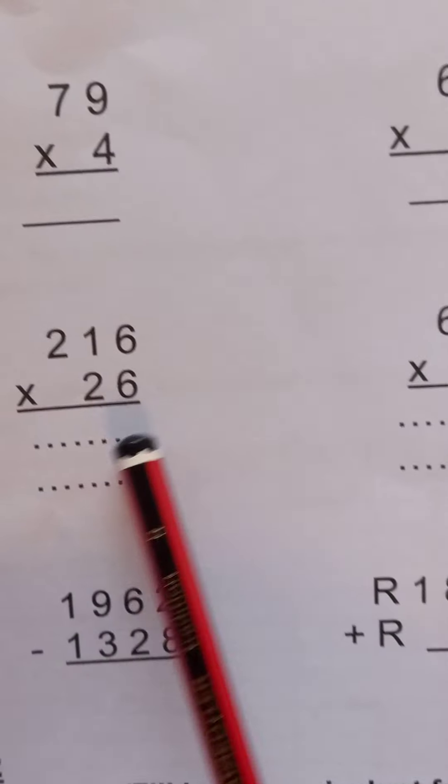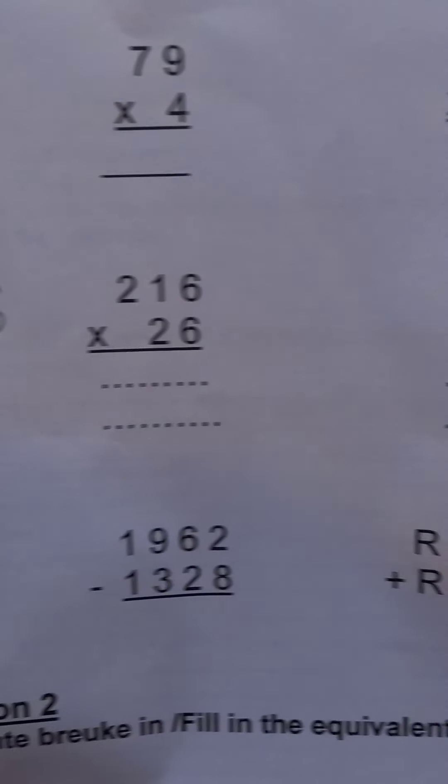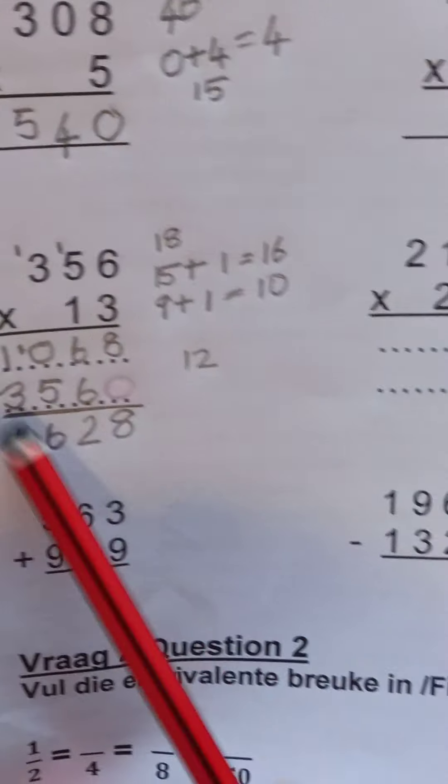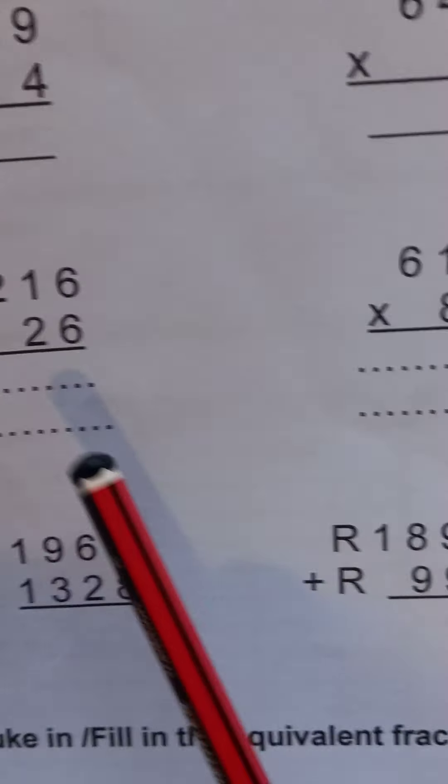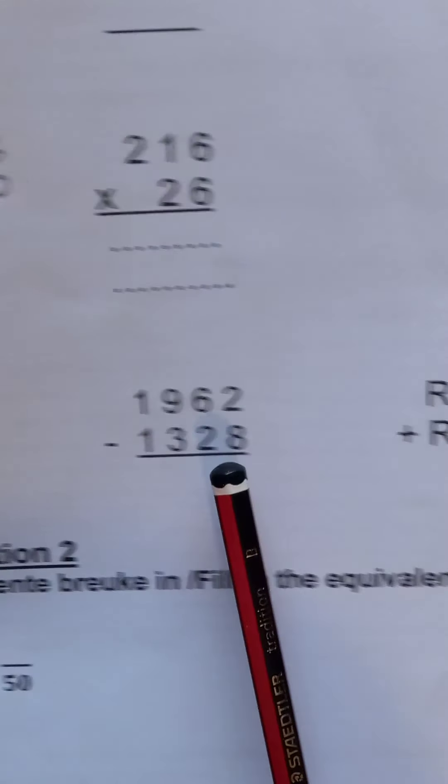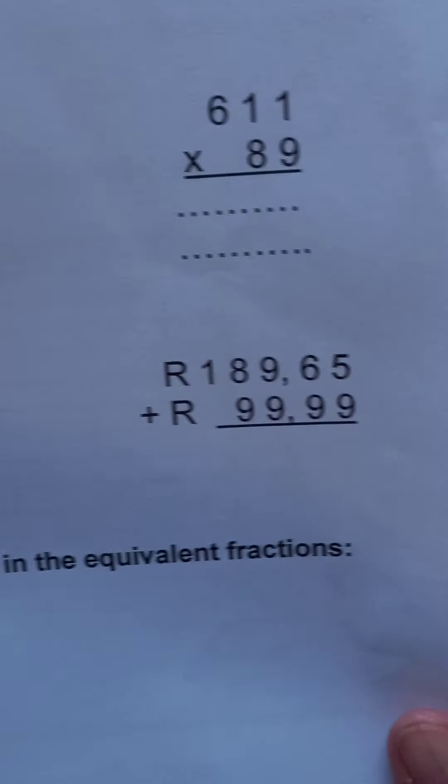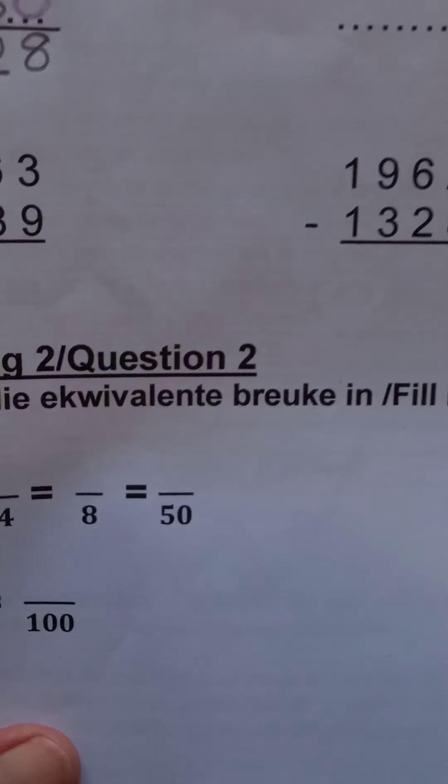So I've done an example of the two digit multiplication. Work with that method over there and you can do these three sums on your own. This is just a plus, just a minus, and also just a plus. Then question two.